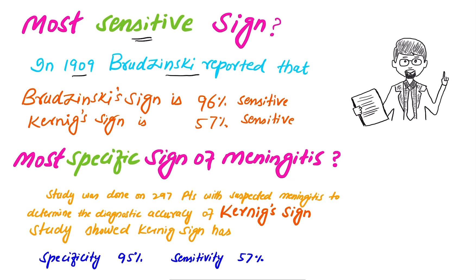In 1909, Brzezinski reported that the Brzezinski sign is 96% sensitive and the Kernig sign is 57% sensitive. A study was done on 297 patients with suspected meningitis to determine the diagnostic accuracy of both signs. The study shows that Kernig sign has a specificity of 95% and sensitivity of 57%. So, Brzezinski sign is the most sensitive test and Kernig sign is the most specific test for meningitis.